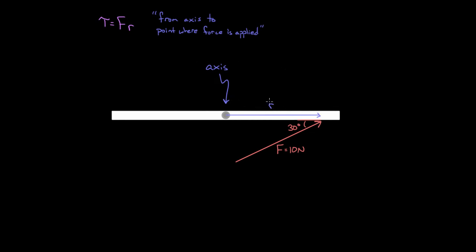Technically, this R is a vector — you can think of it as a position vector. It points from the axis to the point where the force is applied; it doesn't point the other way. The direction is always away from the axis to the point where the force happens to be applied to the object. Let's give this a number: let's say this happened to be two meters from this axis to the point where this 10 Newtons was applied.